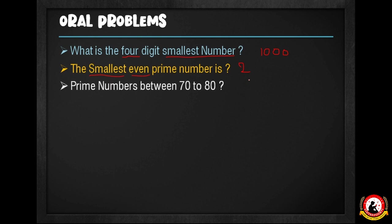The next question is: prime numbers between 70 and 80. There are prime numbers in that range. 71 is one prime number, 73 is another, and 79 is one more. So the prime numbers between 70 and 80 are 71, 73, and 79.